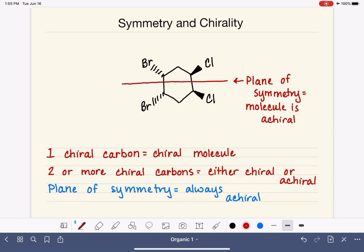We have a special name for molecules like this that are achiral, even though they have two or more chiral carbons. These molecules are called meso compounds, which is defined as an achiral molecule with chiral carbons.